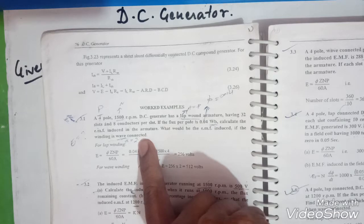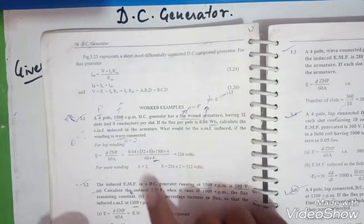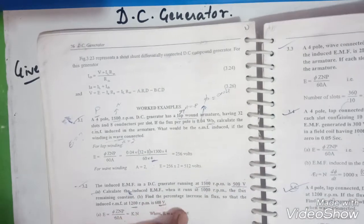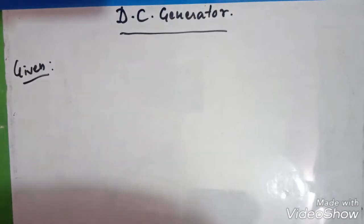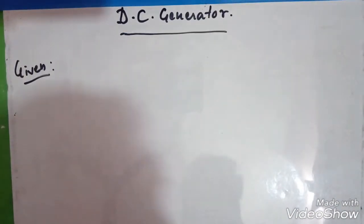This is a mostly asked question worth 5 to 6 marks in the examination. Very important question. Let us solve this problem. To solve this problem, we need to write about the given things here.